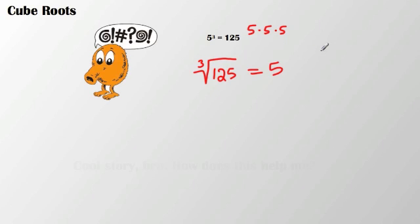Could it also be negative 5? Let's try that out. Negative 5 times negative 5 is positive 25, times negative 5 again gets us negative 125. What we should know is that negative 125 is not the same as positive 125.